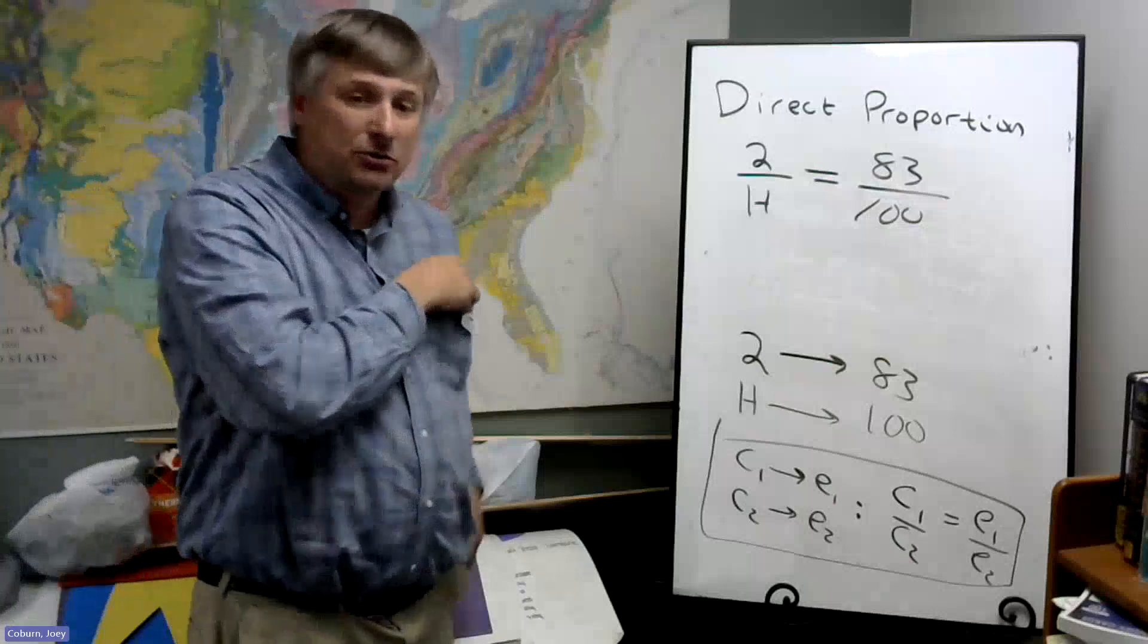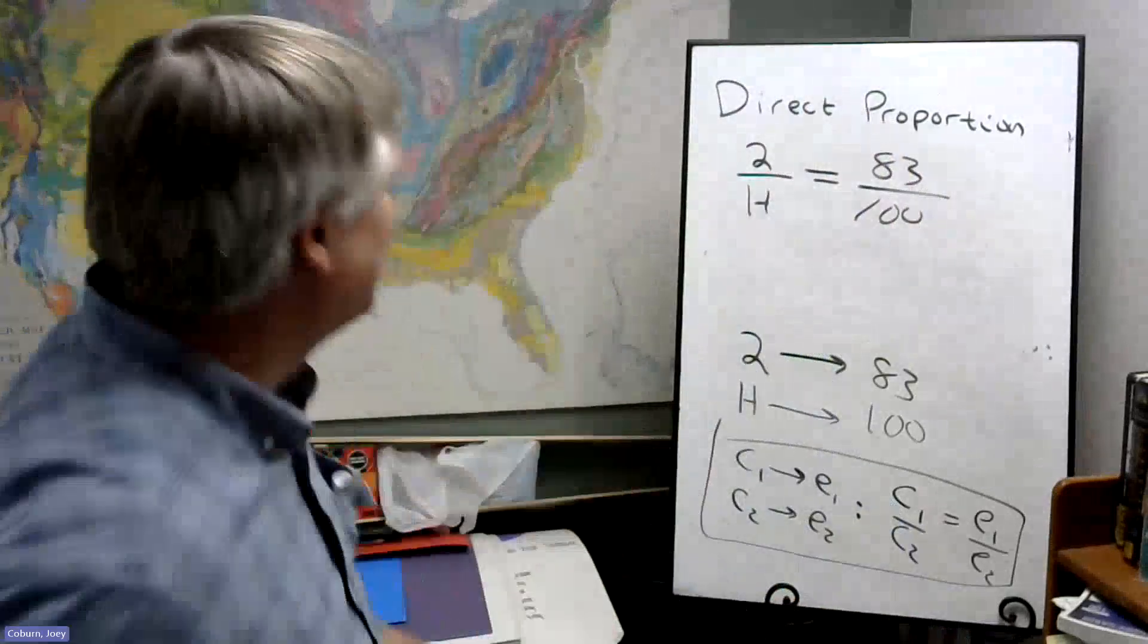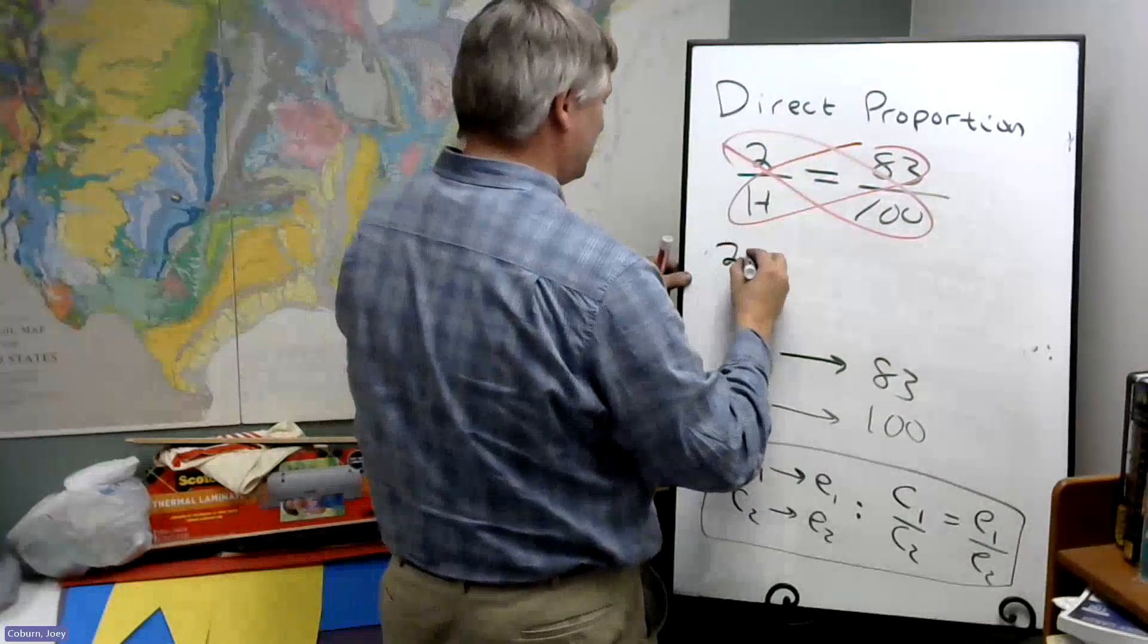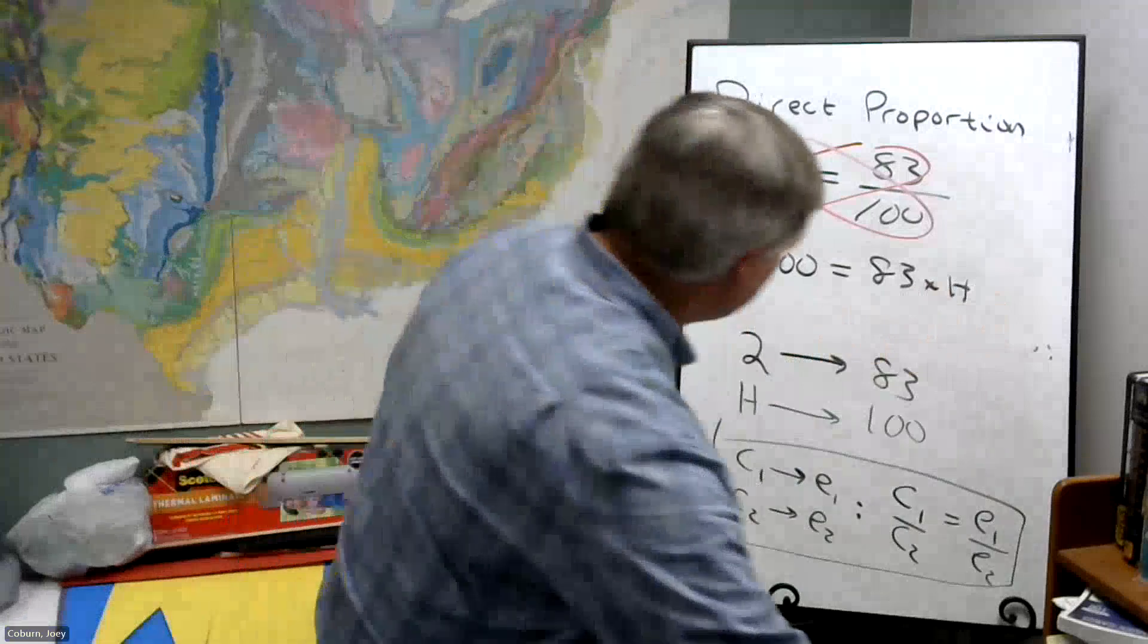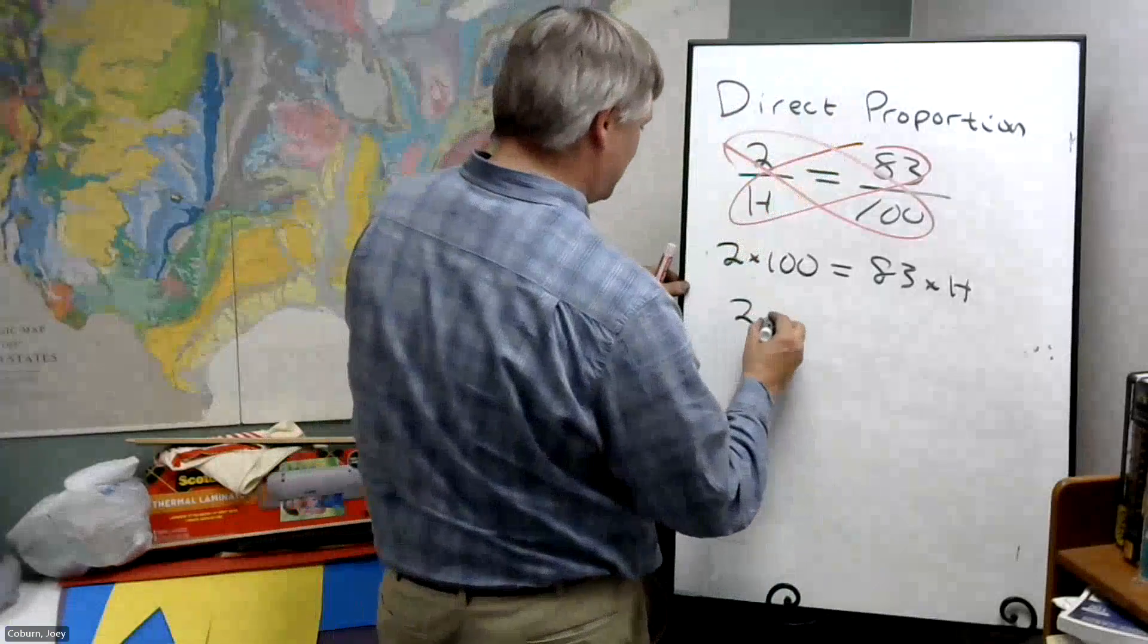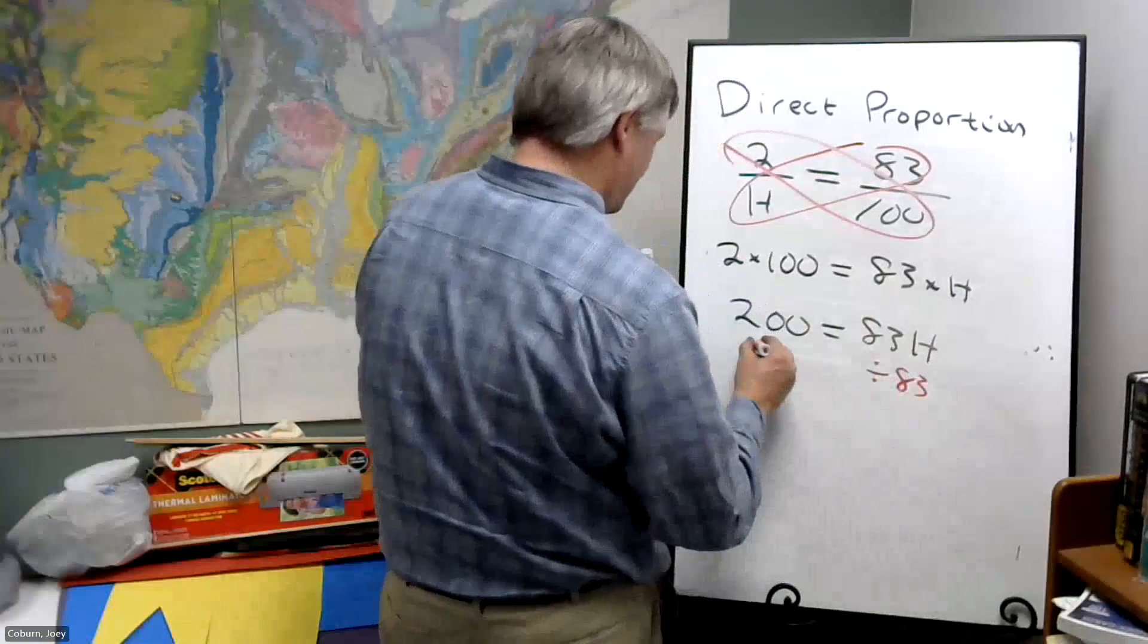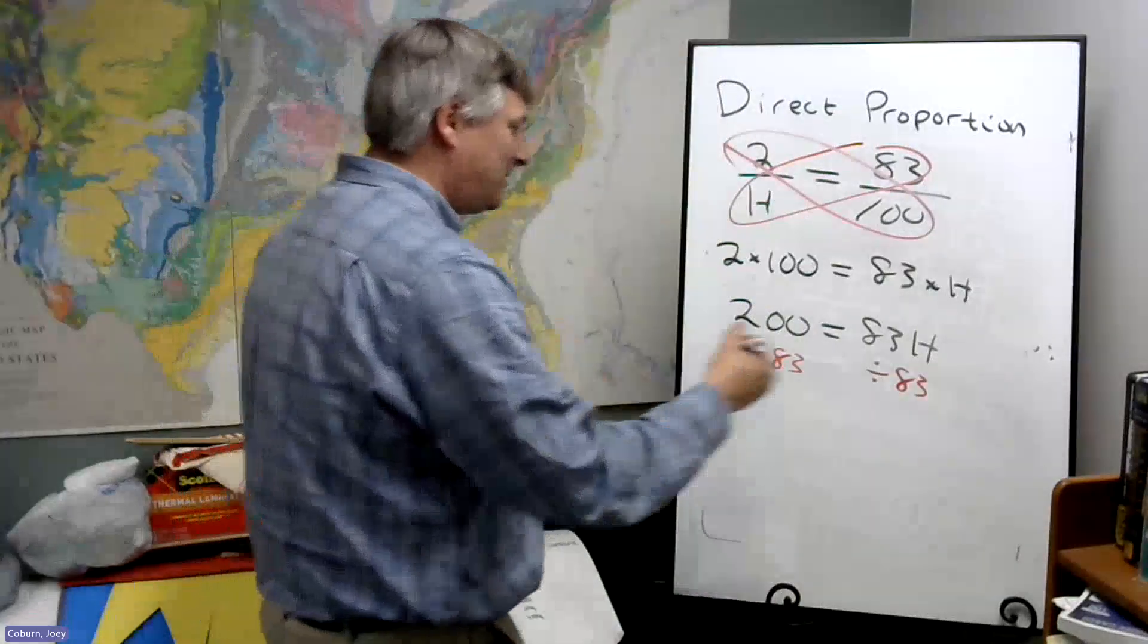Well, once again, we're going to use cross multiplication. So two times 100 equals 83 times H. So this will be 200 equals 83H. So divide both sides by 83. So 83 cancels here.